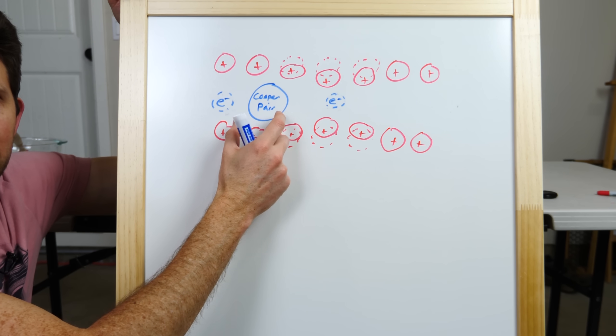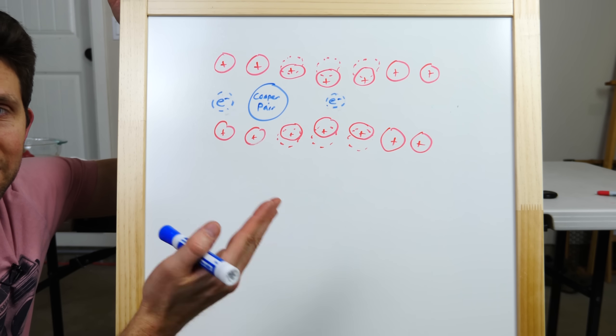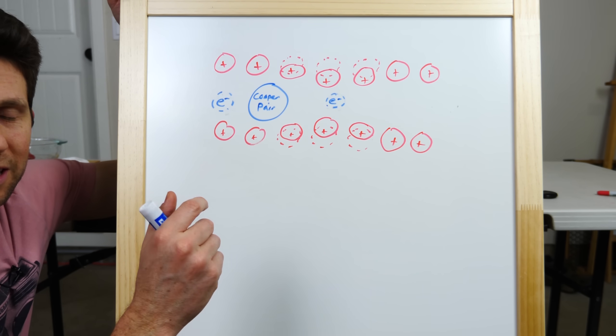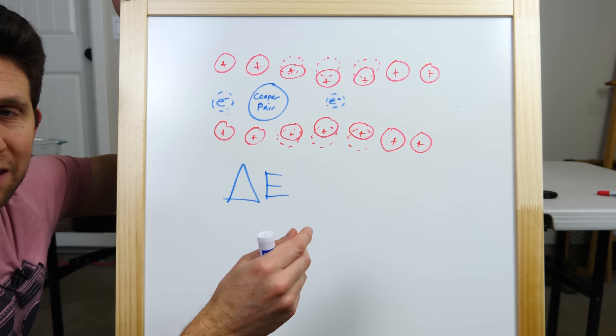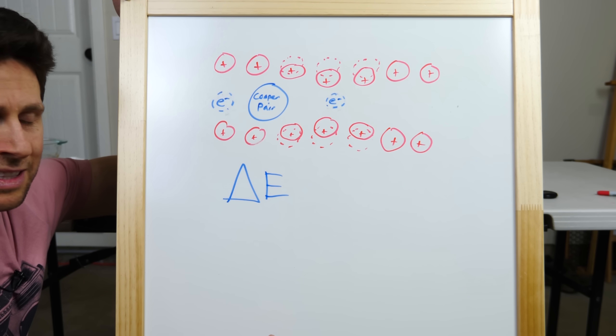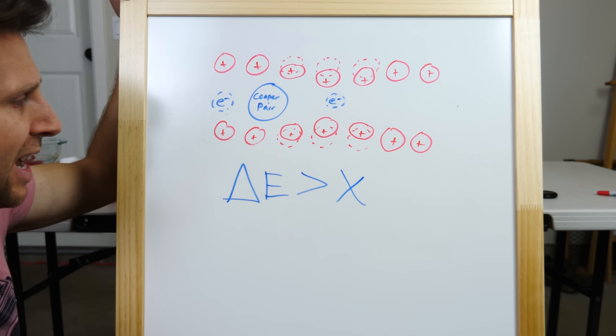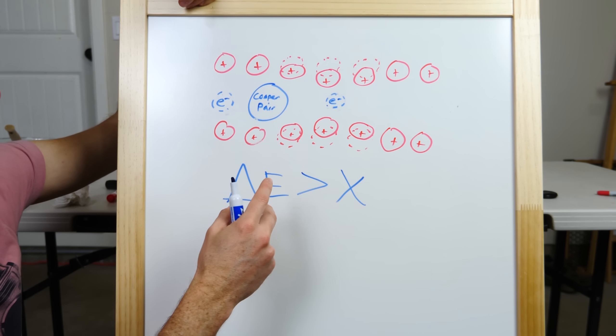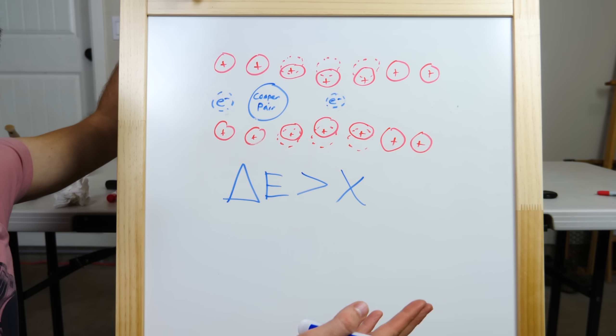So, in order for it to be scattered, meaning in order for it to bump into anything, the thing that it's bumping into has to give it some minimum amount of energy. So, there's some amount of energy that's a minimum that it has to receive. It can't receive anything less than that. So, it has to be greater than some value that I'll just call X. So, at higher temperatures, this Cooper pair or these electrons can move through and bump into the lattice and get scattered and lose energy.